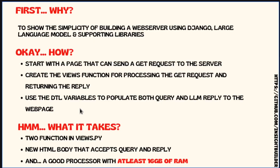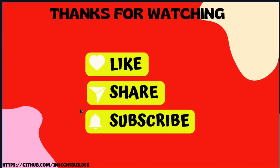How are we going to implement the page shown? First, you need a web page that provides the user with an input location for their query. Second, once the query is provided, there will be a submit button to process it. The page needs a request-raising form. In the backend, you need two functions: one for rendering the basic page, and one that loads the model, processes the query, and returns the inference. Finally, once the reply is received, there must be a way to place it back on the page. In Django, this takes two functions in views.py, a new HTML body that accepts query and reply, and a processor with at least 16 GB of RAM.